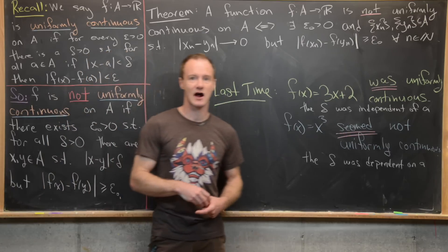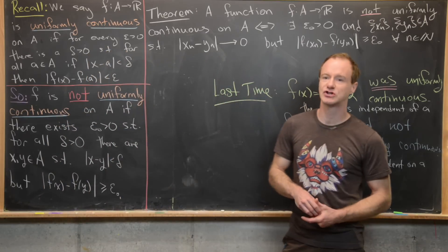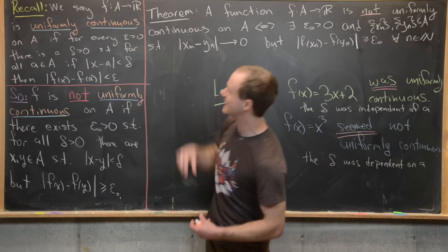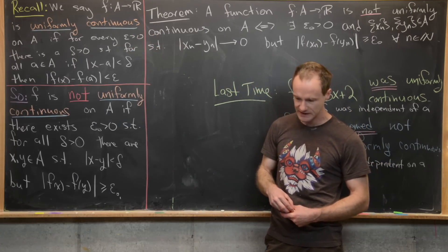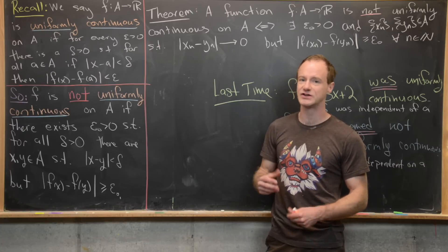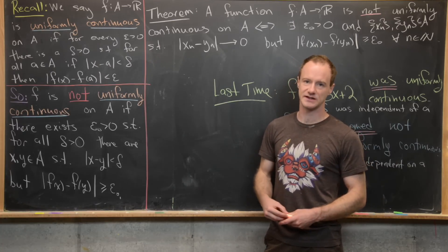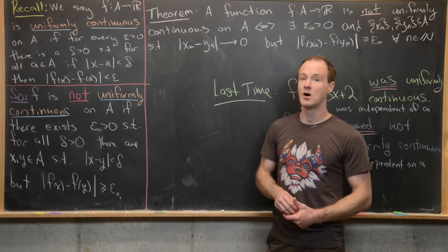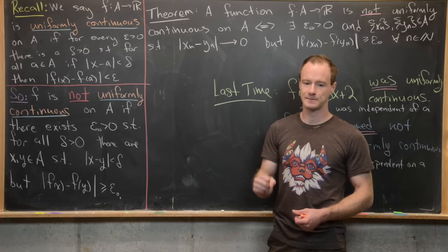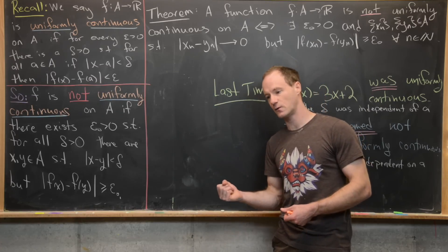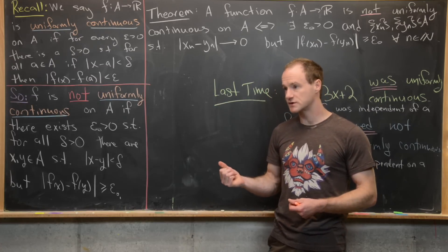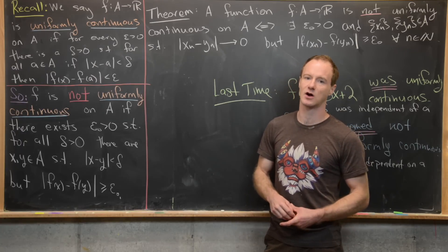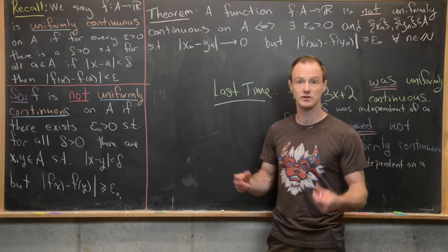Before stating our theorem, we need to carefully negate the definition of uniform continuity to obtain a definition of being not uniformly continuous. Recall that when negating a mathematical statement: all 'for all's turn into 'there exists', 'there exists' turn into 'for all's, 'and's turn into 'or's, 'or's turn into 'and's, and all conclusions are negated.